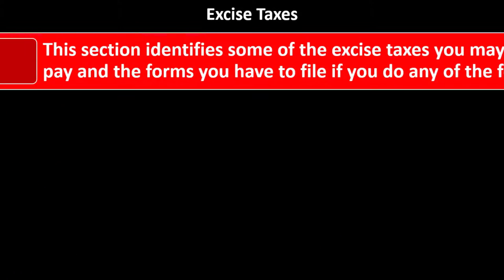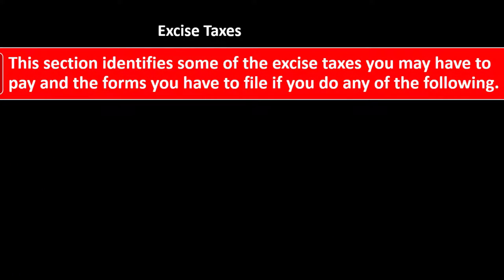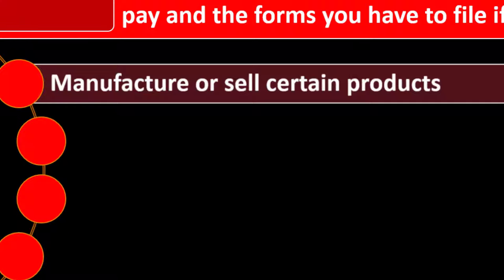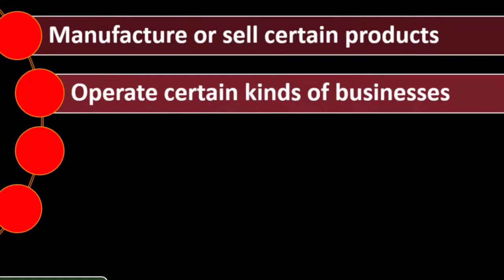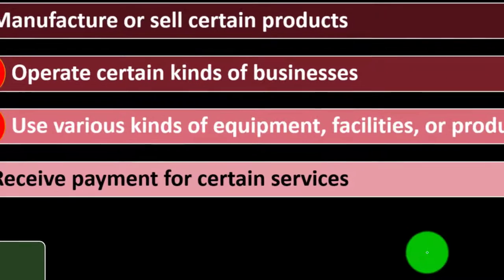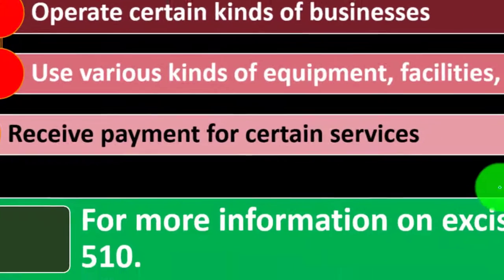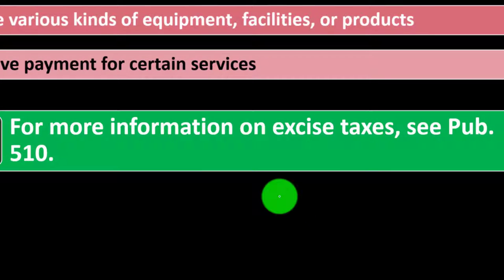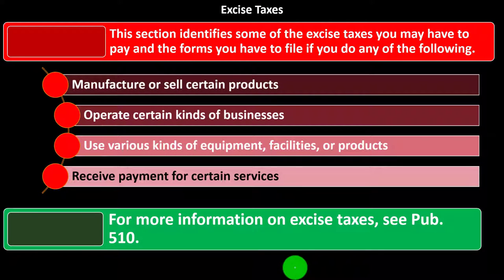Excise taxes. This section indicates some of the excise taxes you may have to pay and the forms you have to file if you do any of the following: manufacture or sell certain products, operate certain kinds of businesses, use various kinds of equipment, facilities, or products, or receive payments for certain services. For more information on excise taxes, see Publication 510. These taxes are specific to particular types of industries, and if you're subject to them, you can dive into more detail with Publication 510.